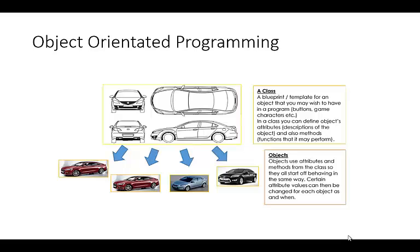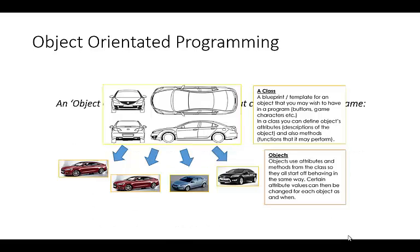So with an object oriented approach what you would end up doing is instead of making a whole host of different variables for the different cars you would create a blueprint, a template for one car. And that car that you define may well have an attribute for example colour, might have another attribute which might be its speed.